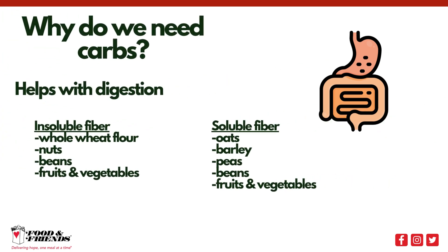There are two kinds of fiber — insoluble and soluble — and both provide important health benefits. Insoluble fiber helps keep our digestive systems regular and promotes regular bowel movements, while not eating enough can increase the risk of constipation. Insoluble fiber is found in many plant foods, including whole grains, nuts, beans, and fruits and vegetables. Soluble fiber attracts and absorbs water in the digestive system, which helps slow down digestion and helps us feel fuller for longer. Soluble fiber can also help reduce diarrhea, as it absorbs excess water and helps bulk stools. Soluble fiber is found in oats, barley, peas, beans, and fruits and vegetables.